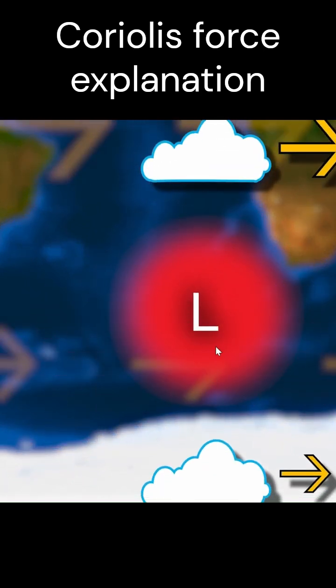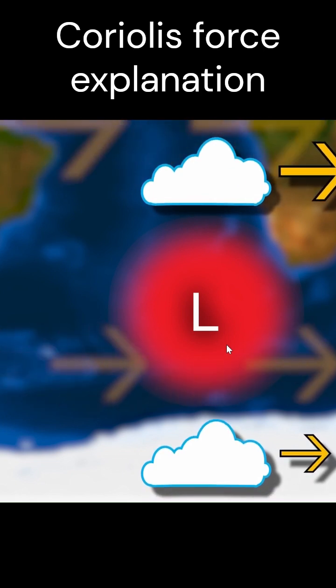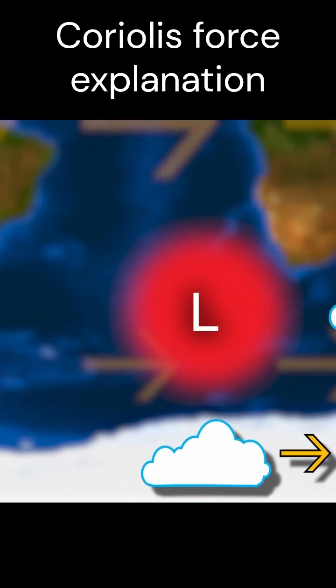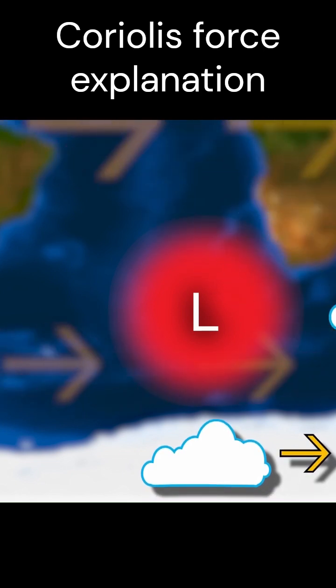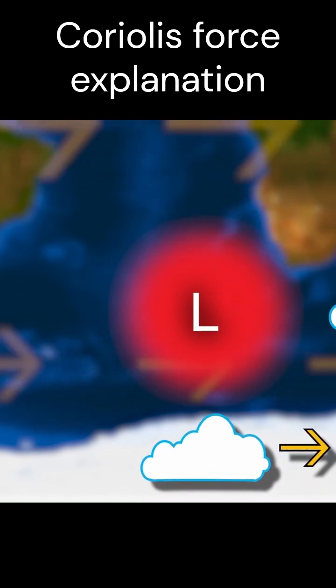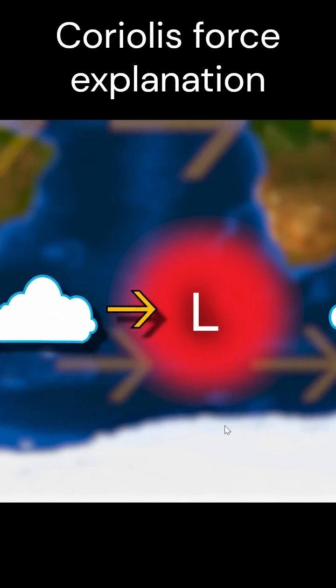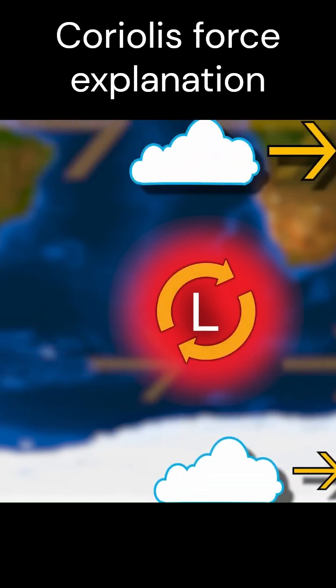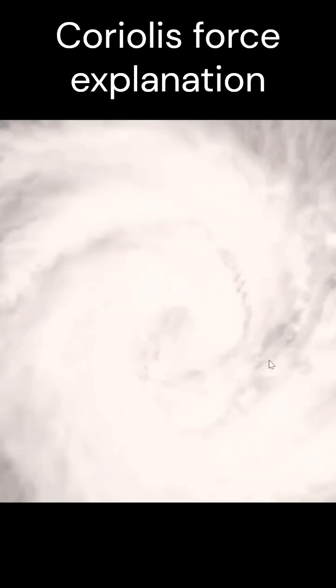The same situation applies to the southern hemisphere. The low pressure is associated with the southern pole, and winds are deflected in this direction from equator to pole, and in that direction from pole to equator, so they rotate in a clockwise rotation.